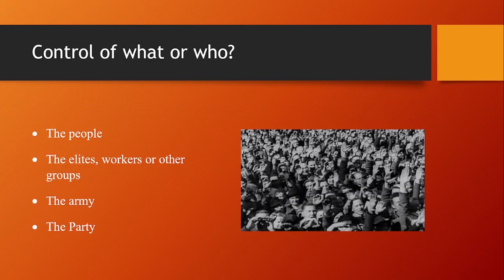Control of what or who — I titled this slide. It might be absolutely appropriate for you to refer to Germans or Germany in answering a question. But it might be necessary, or if not necessary then beneficial, for you to identify just who the Nazis were trying to control more carefully. Was it the elites? Workers? Radicals in their own party? Or the army?